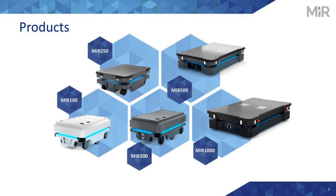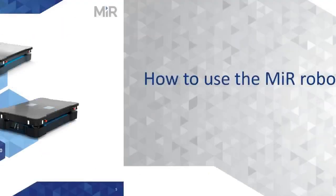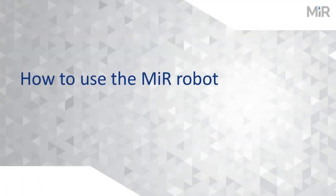MIR offers five robots, the newest being the MIR 250, released within the past couple of weeks. The lineup starts with the MIR 100, and the numbers represent the payload capacity in kilograms — so 100 kg for the MIR 100, 200 kg for the MIR 200, and so on. The MIR 500 and 1000 are considerably larger and designed for handling pallets. Now we're going to get into how to program the MIR and dive into the software.